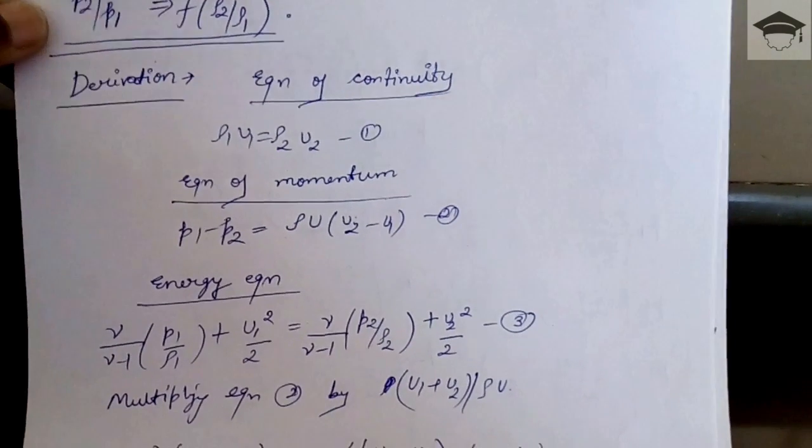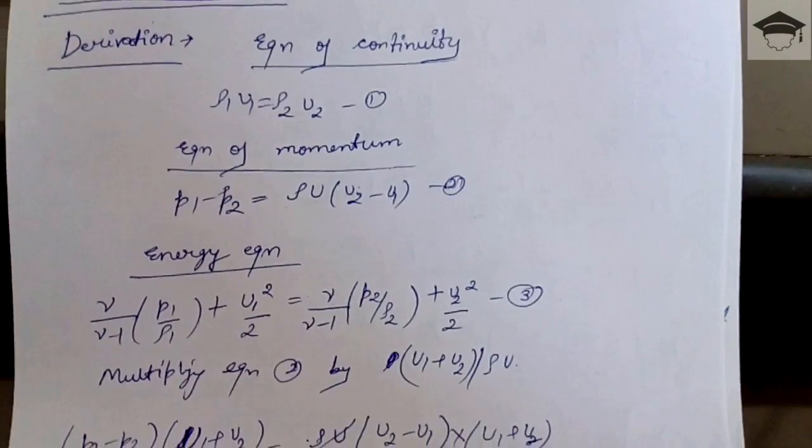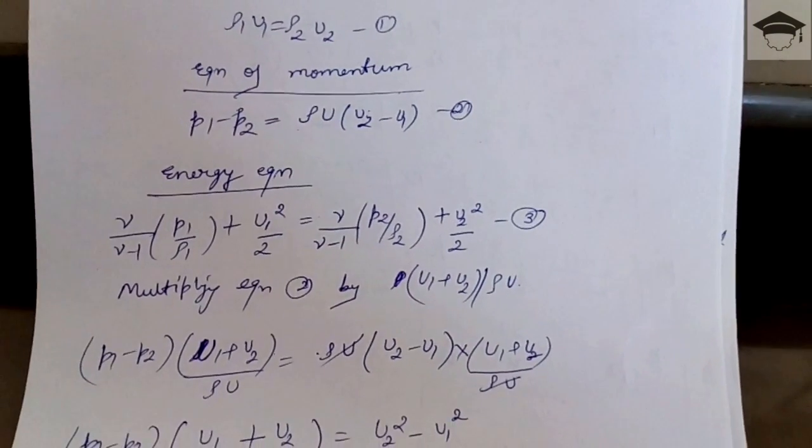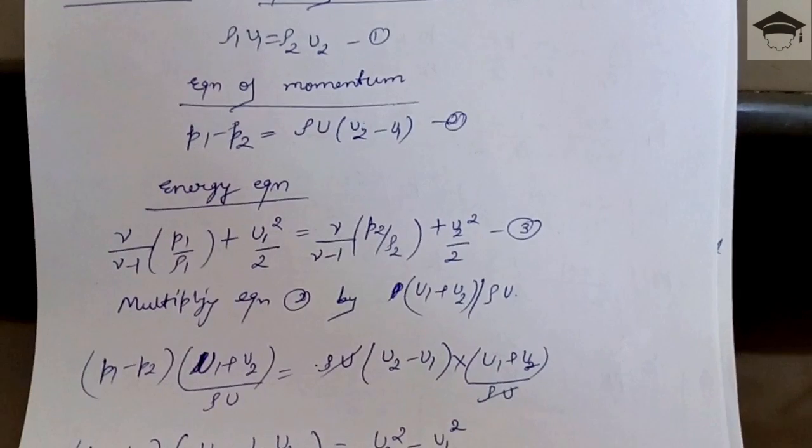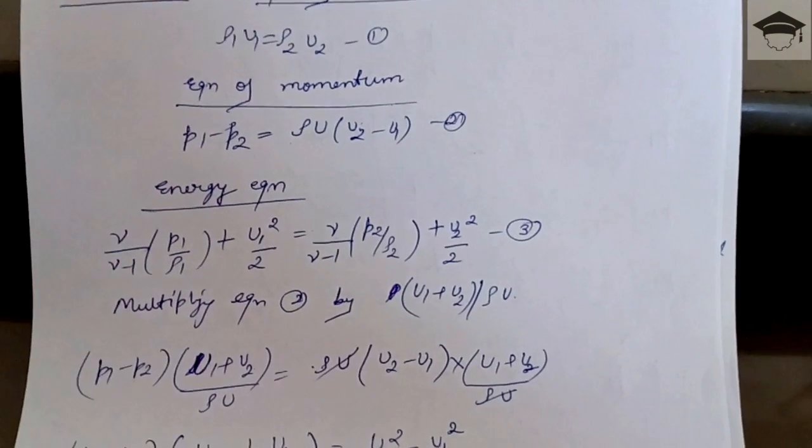This video. Energy equation is γ/(γ-1) × p1/ρ1 + u1²/2 = γ/(γ-1) × p2/ρ2 + u2²/2.